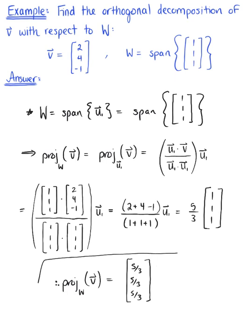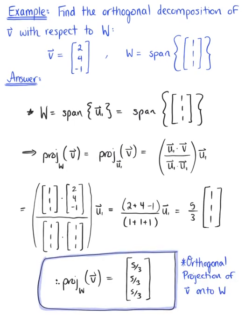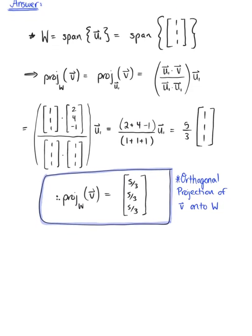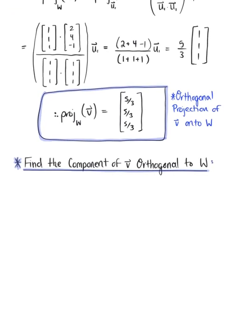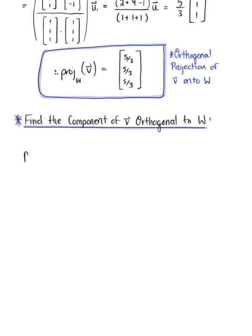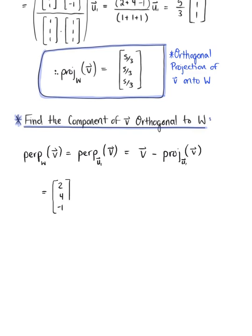We now take this orthogonal projection and use it to find the component of vector v orthogonal to subspace W. In other words, we are looking for the perpendicular component of vector v onto subspace W, which we can equivalently write as the perp of vector v onto vector u₁. Plugging in what we have: vector v is the vector with components 2, 4, -1, and we subtract the orthogonal projection vector we just found, with components 5/3, 5/3, 5/3.